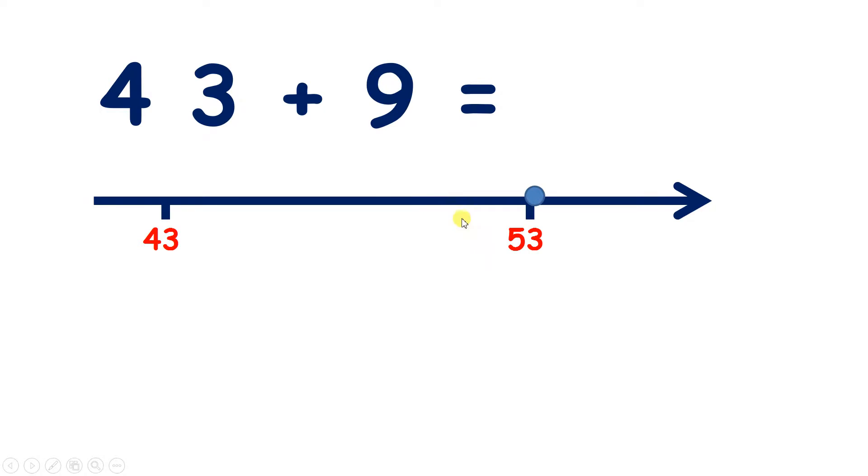So what can we do? Well, we need to go back 1 and that gives us 52, so 43 add 9 is 52.